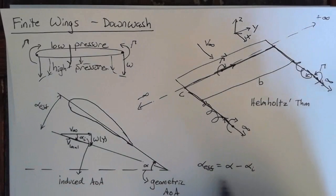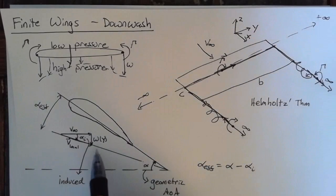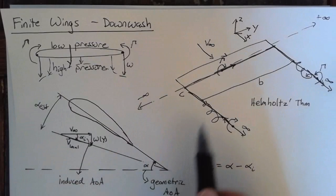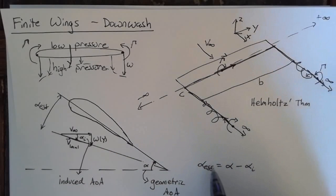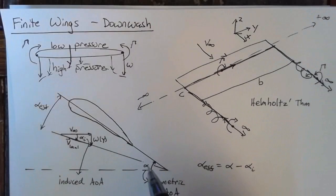So straight away, we can see that the downwash is reducing the amount of lift over a given airfoil section. Since the effective angle of attack is being reduced, the lift generated by this section will naturally be reduced. So that's one effect, but it has another effect as well.